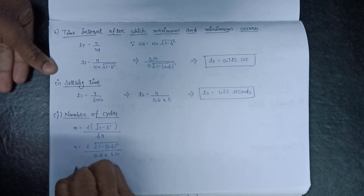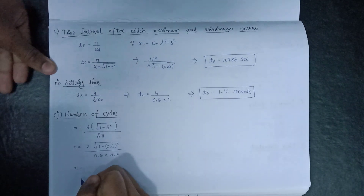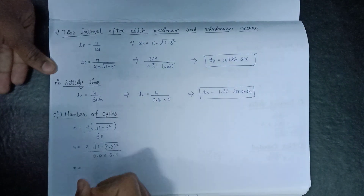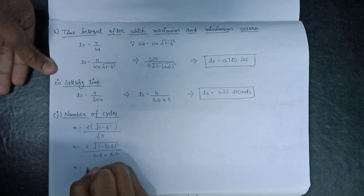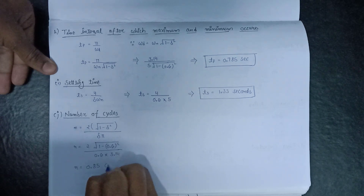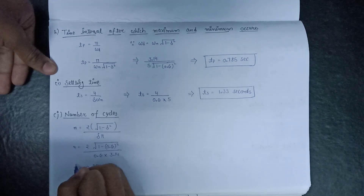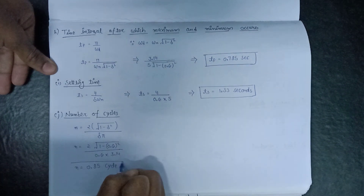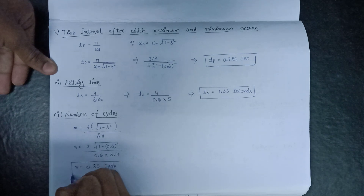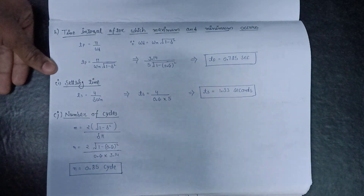On evaluating, the number of cycles N = 0.85 cycles. This is all about example number 4.